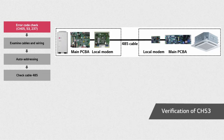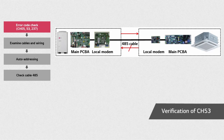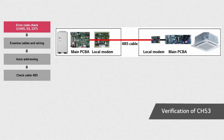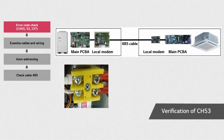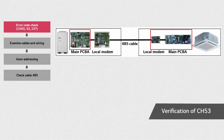Let's talk about error CH53. This error will occur regardless of the IDU and ODU being in Gen2 or Gen4 mode. CH53 occurs when the ODU sends data to the IDU but the ODU cannot receive any signal. When error CH53 occurs, first, check if the 485 cable between indoor and outdoor units is properly installed. Second, check if the communication cable is loosely or not connected to the block terminal. And third, check if there is any local modem or main PCB error.